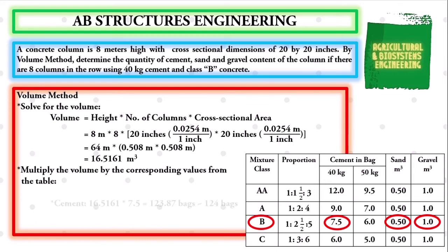The first value that we are going to solve is the quantity of the cement. We have the volume of 16.5161 times 7.5, giving us an answer of 123.87 bags or say 124 bags.